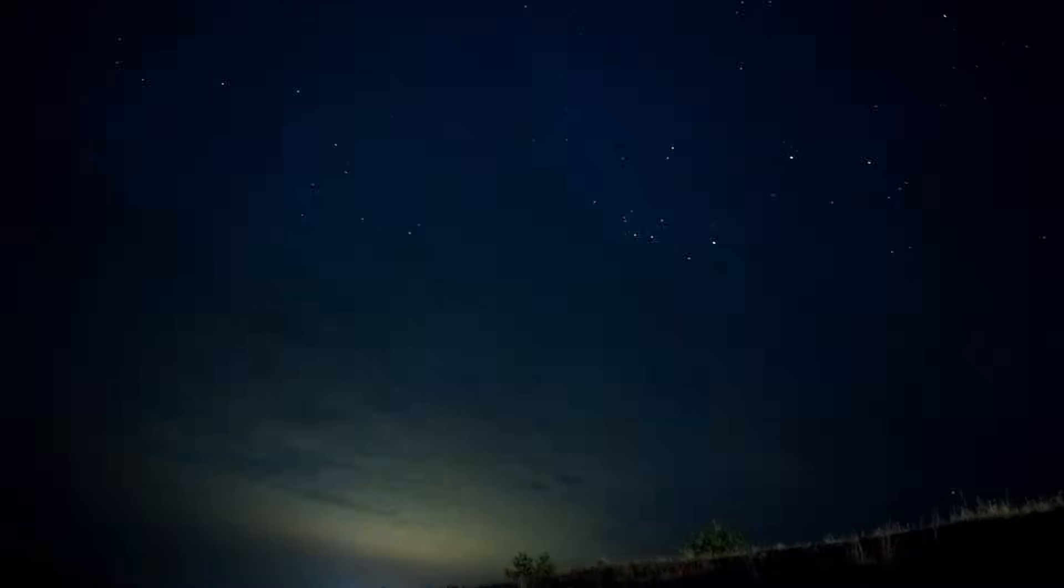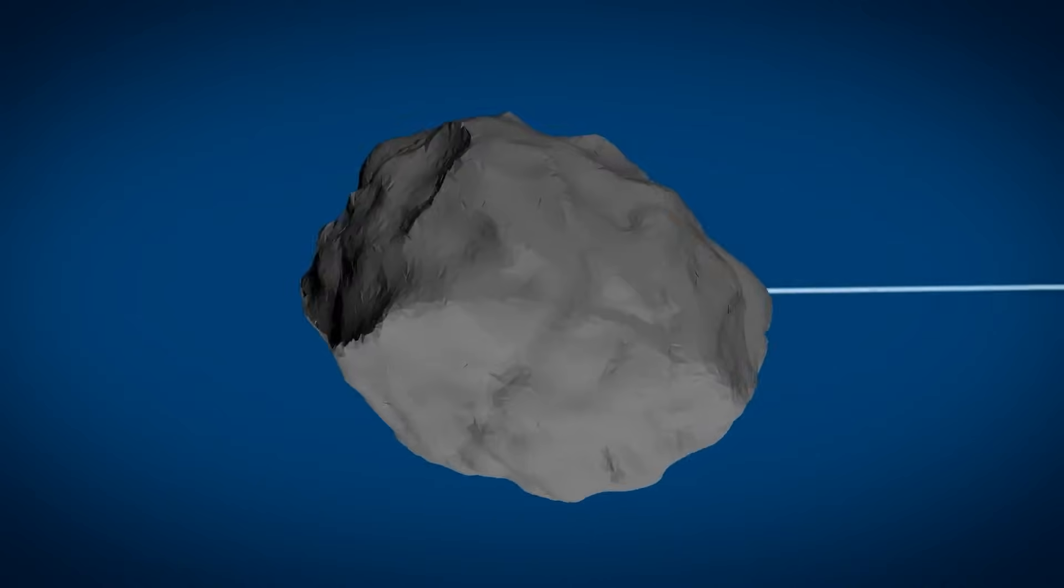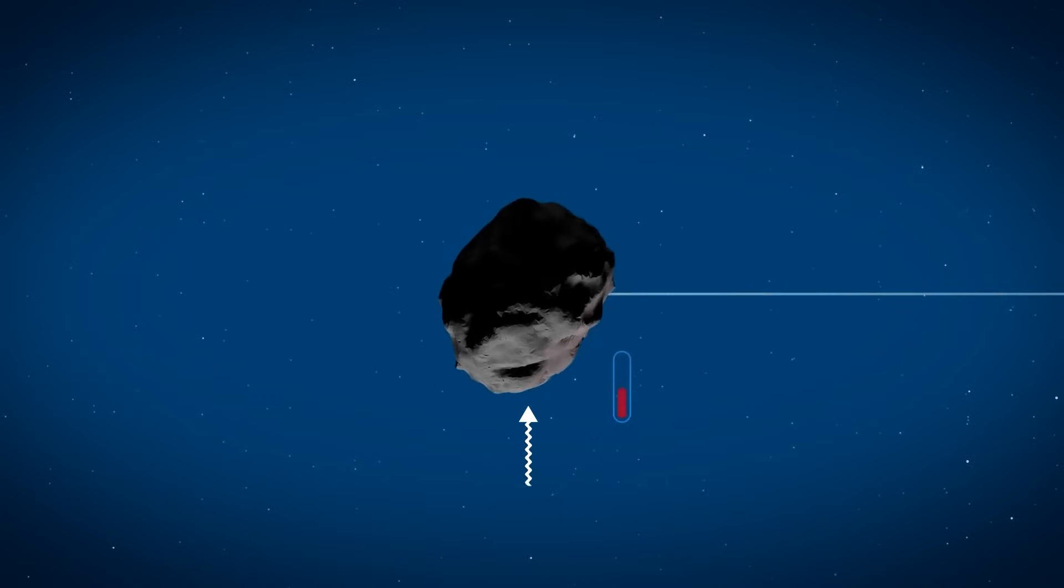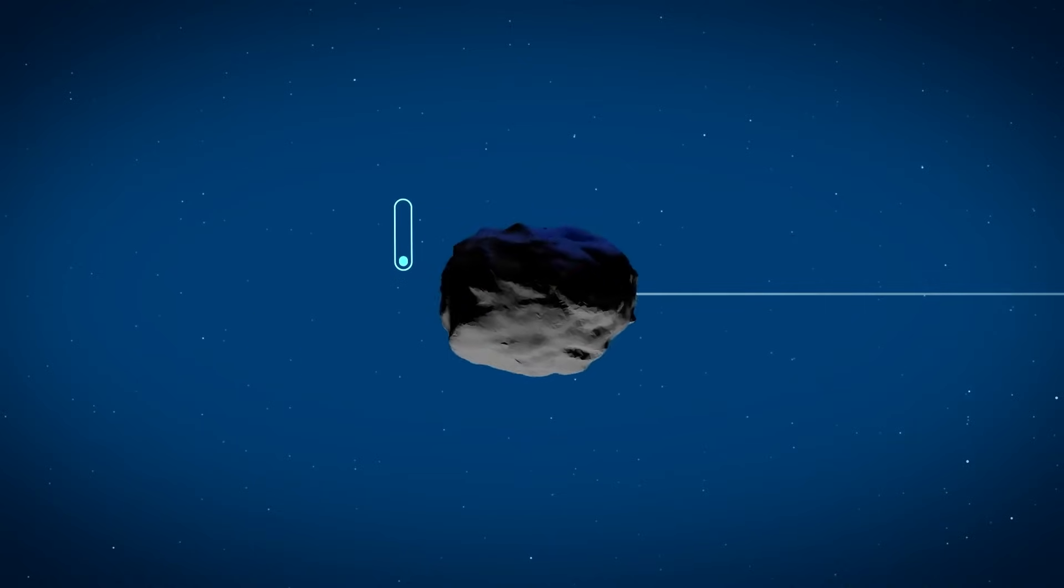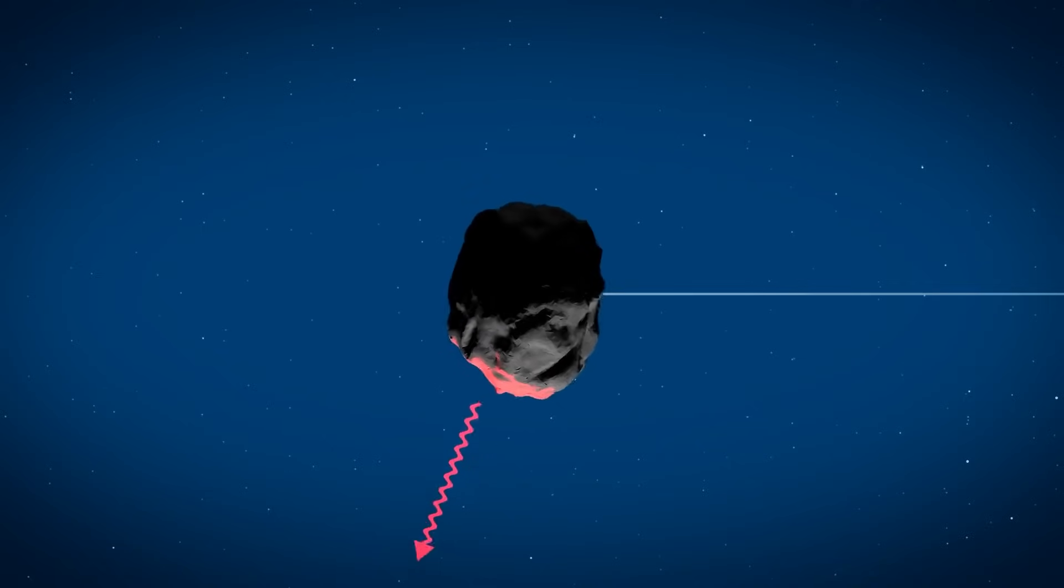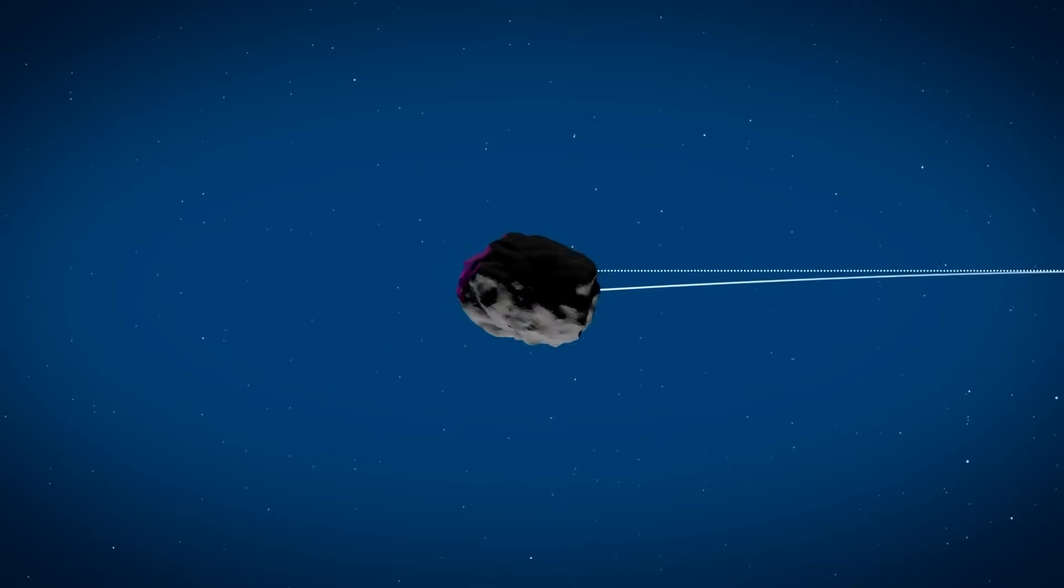This brings us to a very important point. If sunlight can affect an asteroid 340 meters in diameter, what else might be influencing its path? Are we really in control of the situation? Or are invisible forces conspiring silently to bring chaos, or rather, Apophis, towards us?